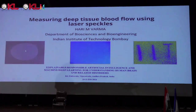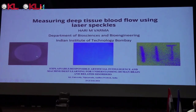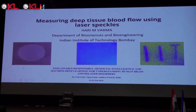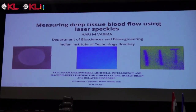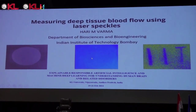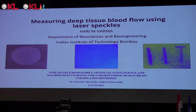On this side there is a PDMS block in which I have engraved the word 'IIT', and then I put a butter paper on top of it. When I shine the laser into this you can see the middle picture — it's unclear — but when you compute a quantity called speckle contrast, it reveals the engraved word 'IIT'.